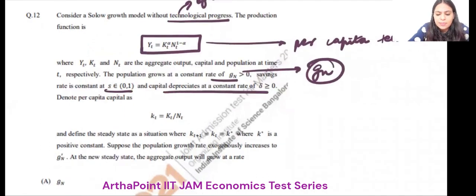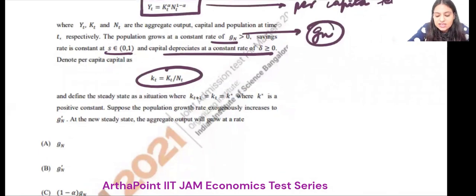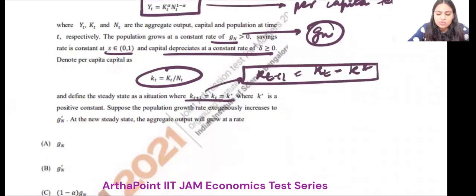Savings rate is given to you. Capital depreciates. Small k is given to you. And then it says that there is a steady state at K star where Kt plus 1 is equal to Kt is equal to K star. Everything is given to you.